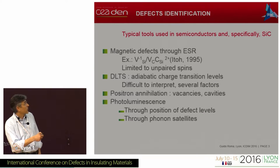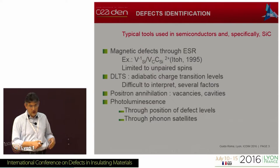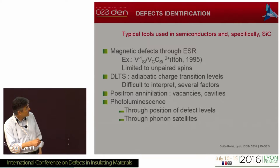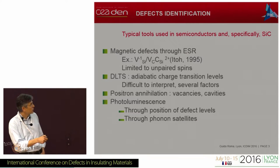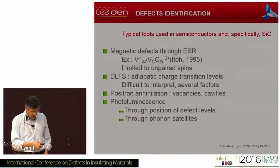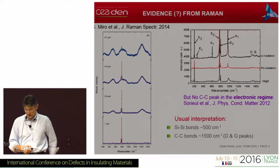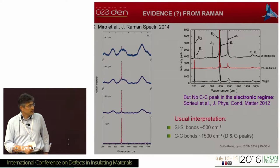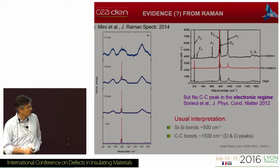Positron annihilation, for example, is limited to vacancies and cavities where positrons have a larger lifetime. Other techniques involve the specific phonon signature of defects, for example through phonon satellites in photoluminescence. With Raman spectroscopy, which has been used quite a lot in recent years to characterize damage in silicon carbide and other materials, one probes the phonons — at least in certain conditions, as I will show later.